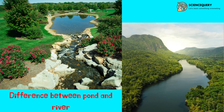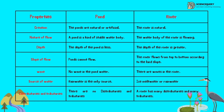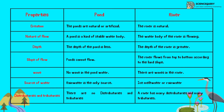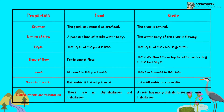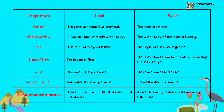Now the difference between the pond and river. The pond is natural or artificial; the river is natural. A pond is a kind of stable water body whereas the water body of a river is flowing. The depth of the pond is less; the depth of the river is greater. Ponds cannot flow, whereas the river flows from top to bottom according to the land slope. There are no waves in pond water but there are waves in river water. Rainwater is the only source for a pond, whereas for a river, ice melt water or rainwater are the sources. There are no distributaries and tributaries in a pond, whereas a river has many distributaries and tributaries.